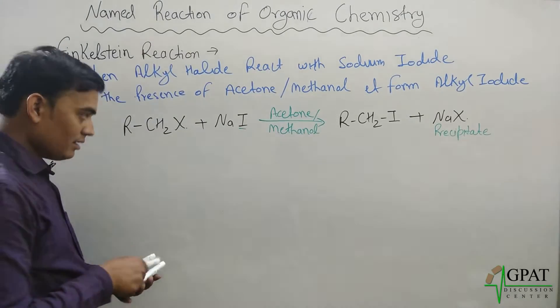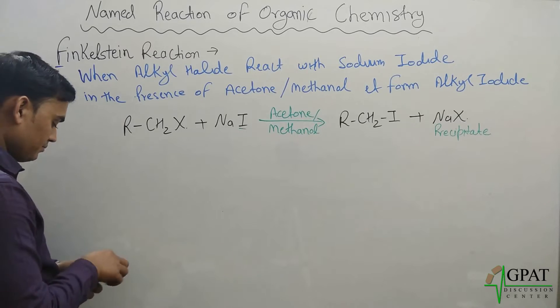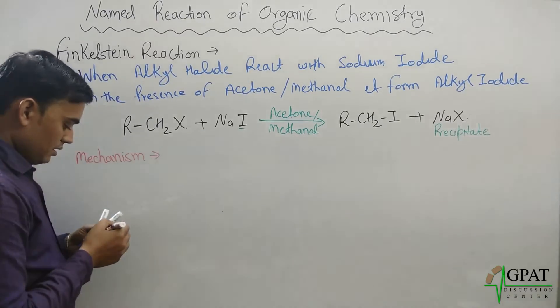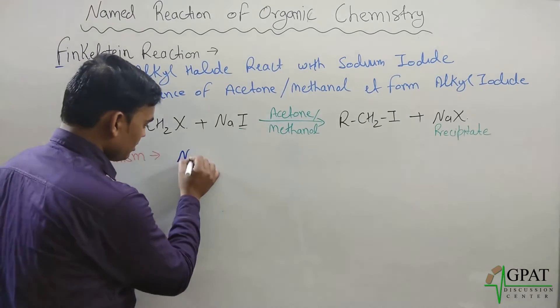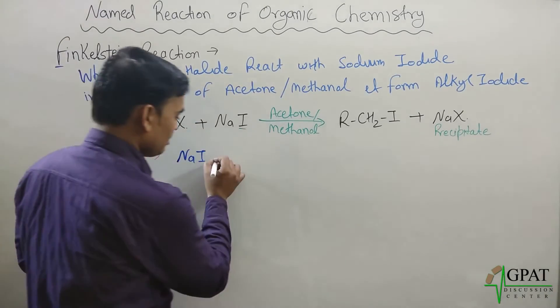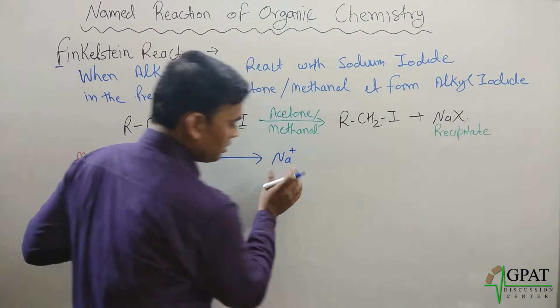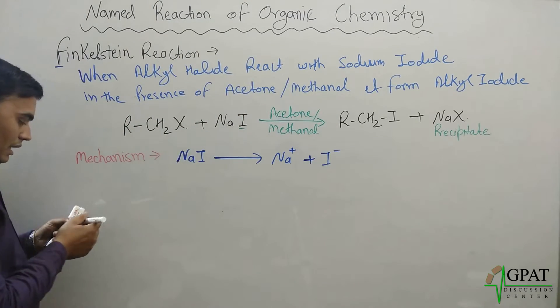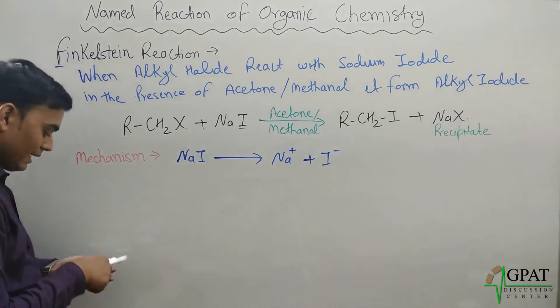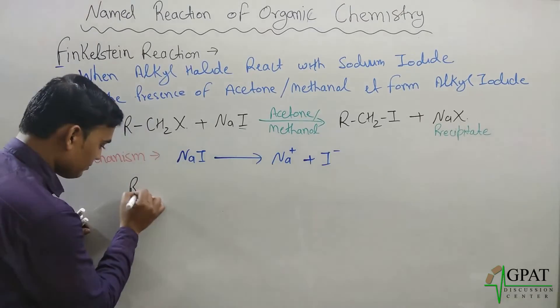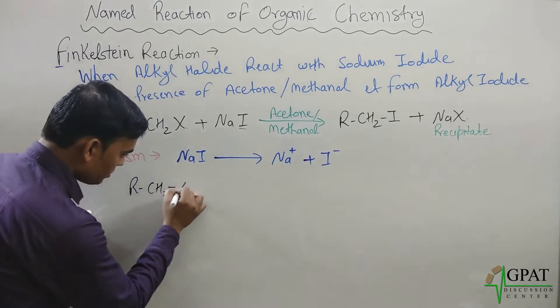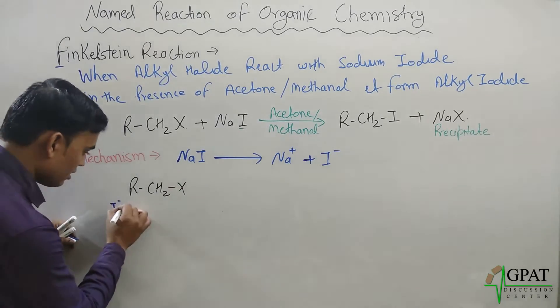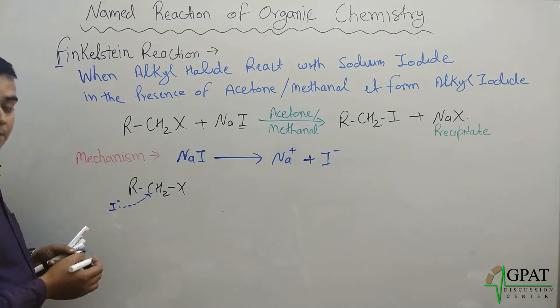Now what is the mechanism behind it? What happens? First, this sodium iodide will get broken down and form sodium with positive charge and iodine with negative charge. This iodine will attack on our alkyl halide compound, R-CH2-X.